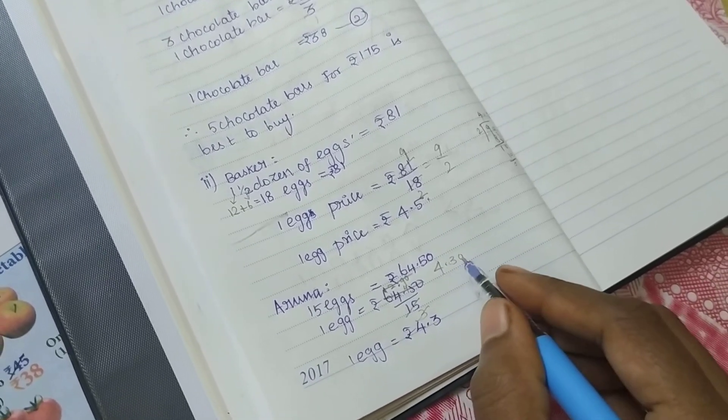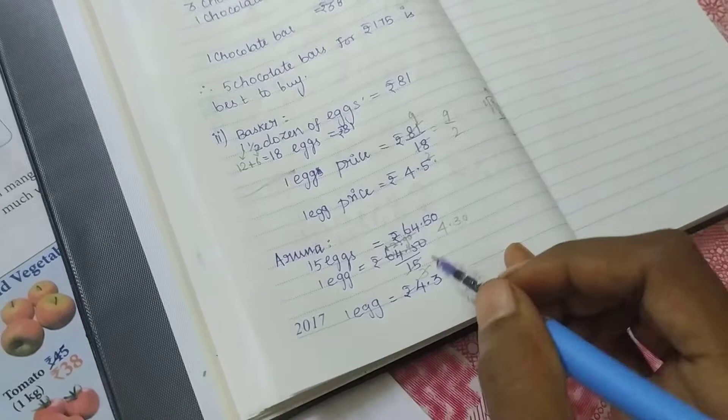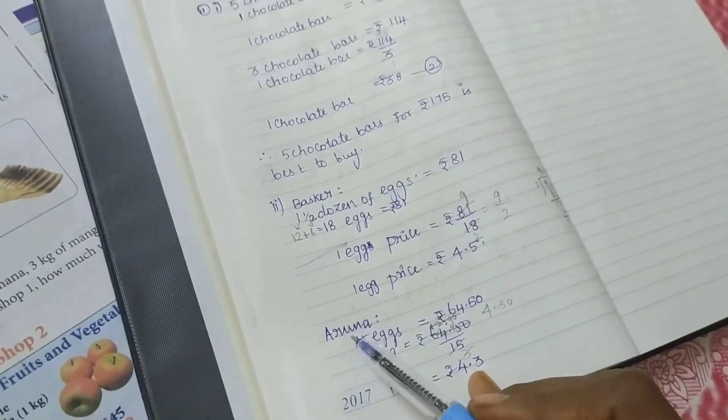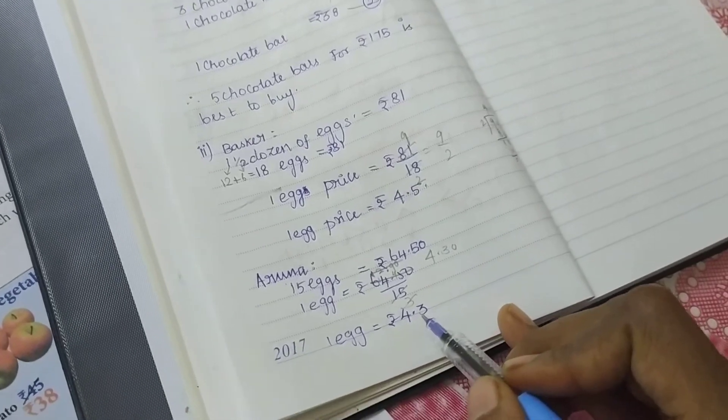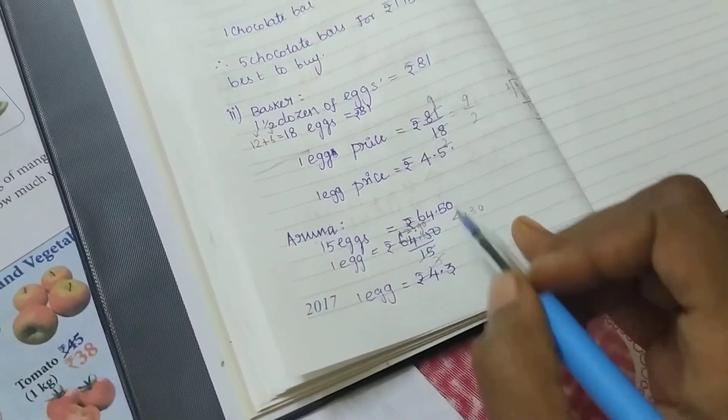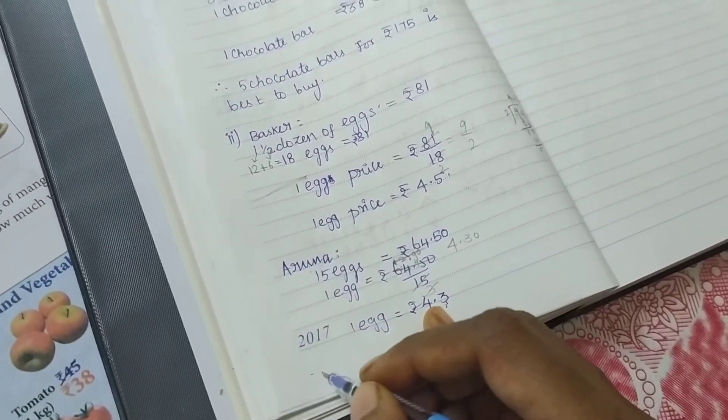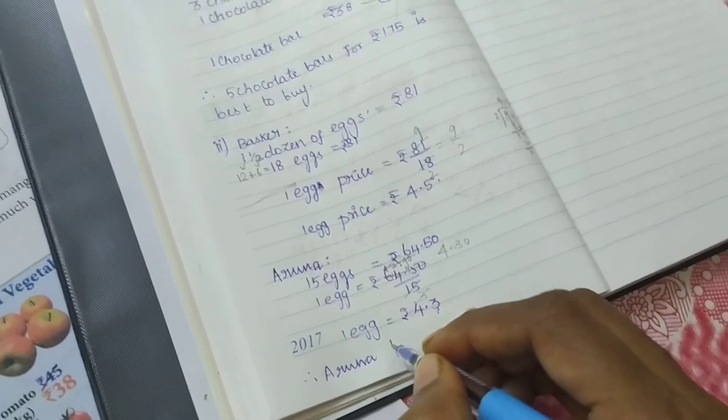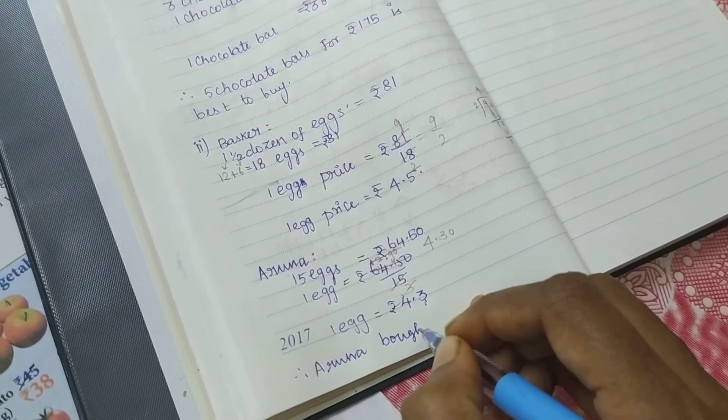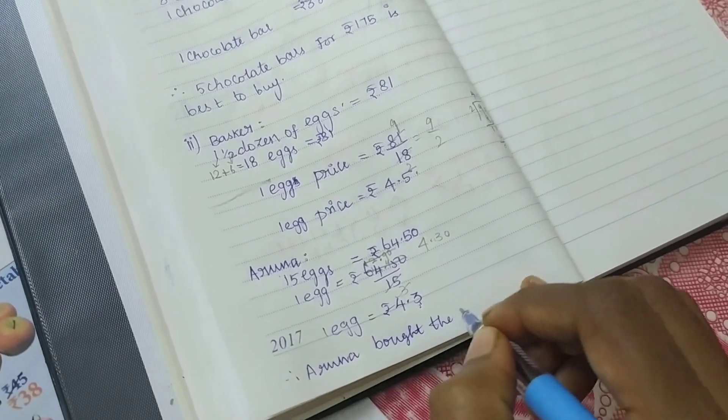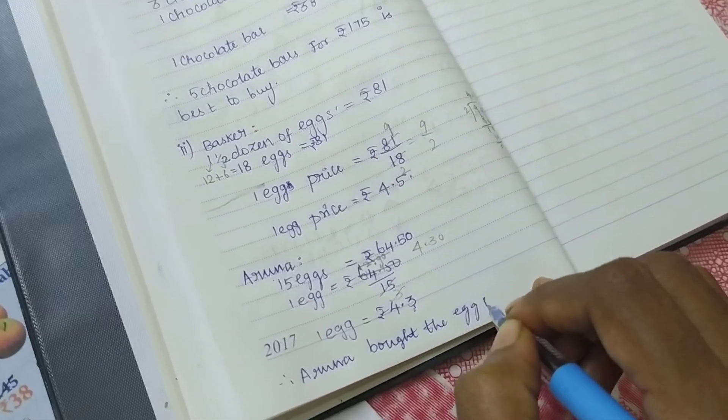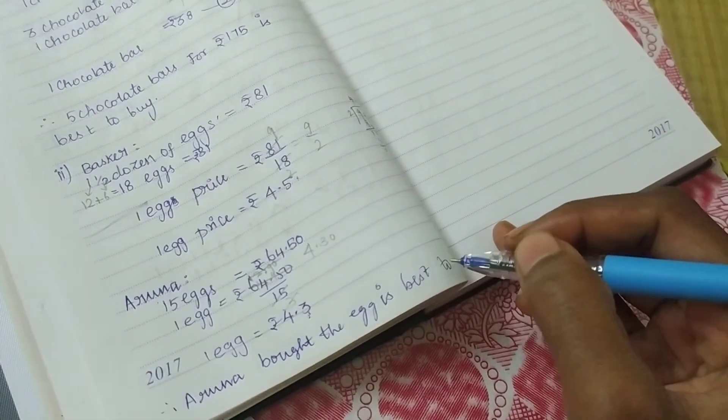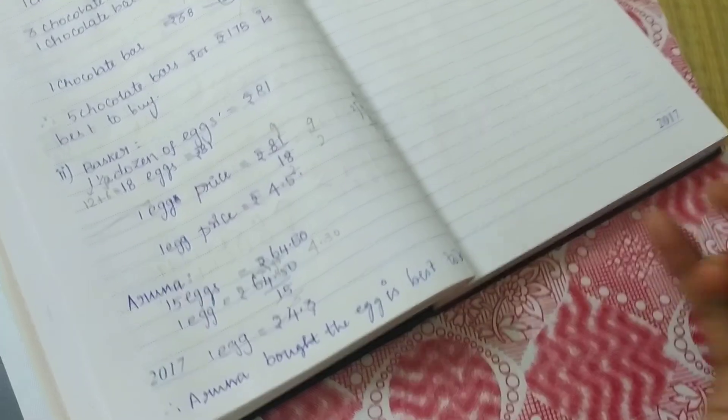Which one is better - Basket at 4.5 rupees or Aruna at 4.3 rupees? 4.3 is less. Therefore, Aruna bought the eggs at the best price. 4.3 rupees per egg is the best buy.